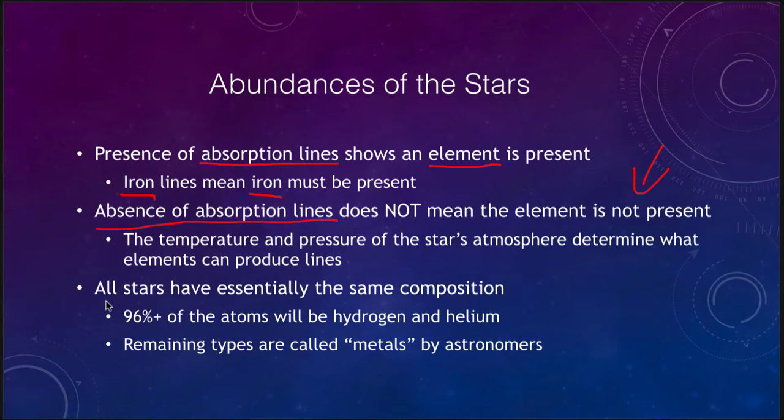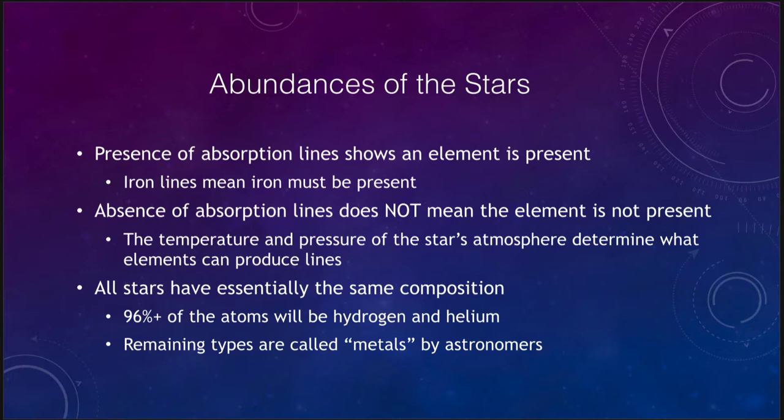What we see is that all stars have essentially the same composition — 96% or more of the atoms in any star are going to be hydrogen and helium. Anything else astronomers call metals, meaning anything heavier than helium. So when you see the terminology about metals or metallicity, that simply means the percentage of a star that is not hydrogen or helium.